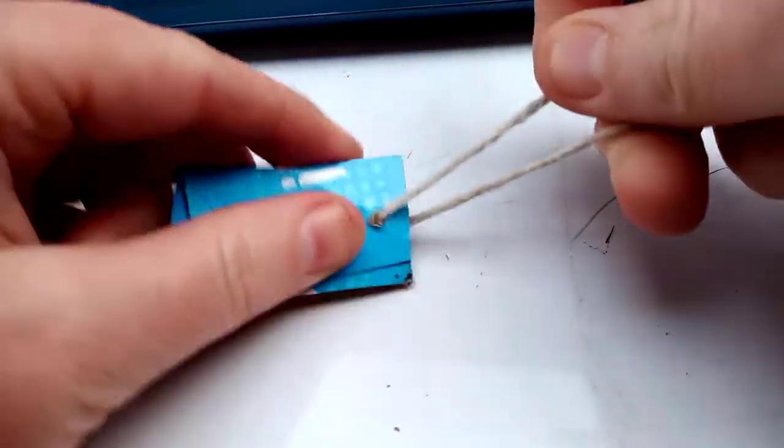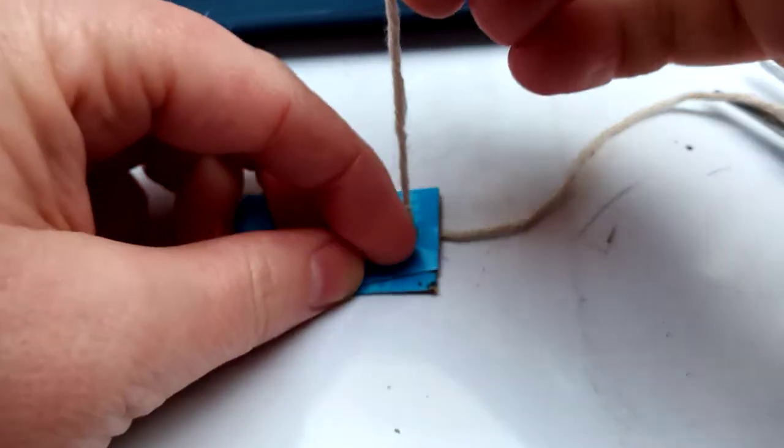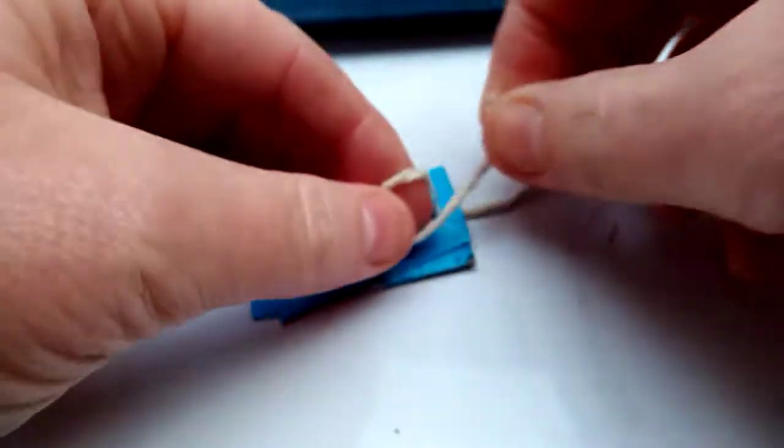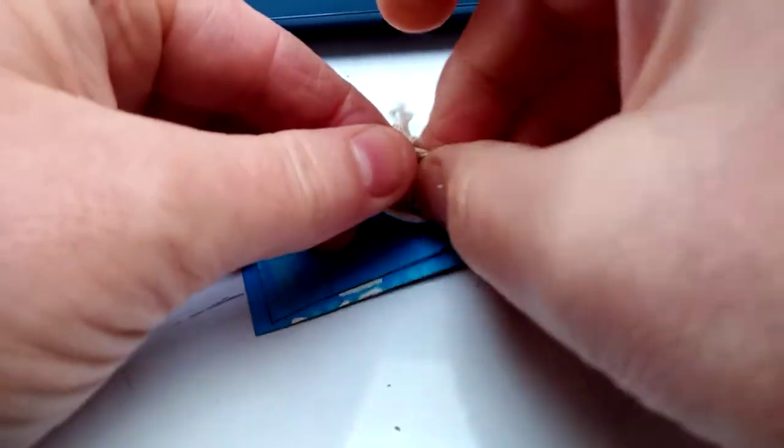So thread your two bits of card onto a string and then cinch them together. There we go. Now you need to tie a knot. It's got to be a tight knot.